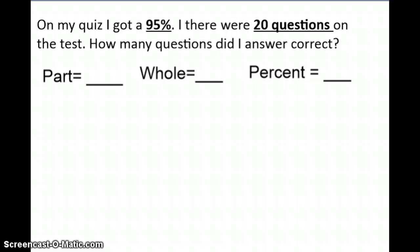Let's look at our first example. On my quiz I got a 95%. There's a typo, right here should be 'if'. If there were 20 questions on the test, how many questions did I answer correct? First thing we want to do is determine what is the part, what is the whole, and what is the percent. The percent is easy because 95%, we have that percent sign attached to the percent. So the percent is 95.